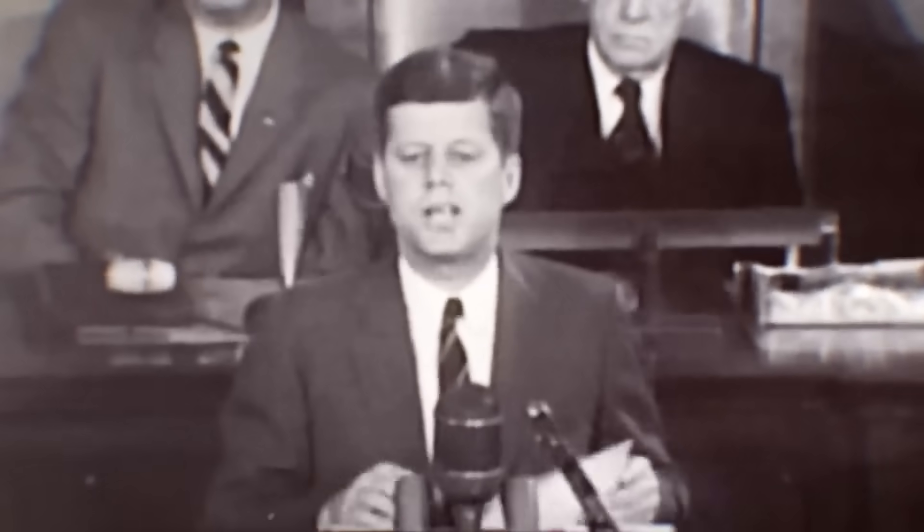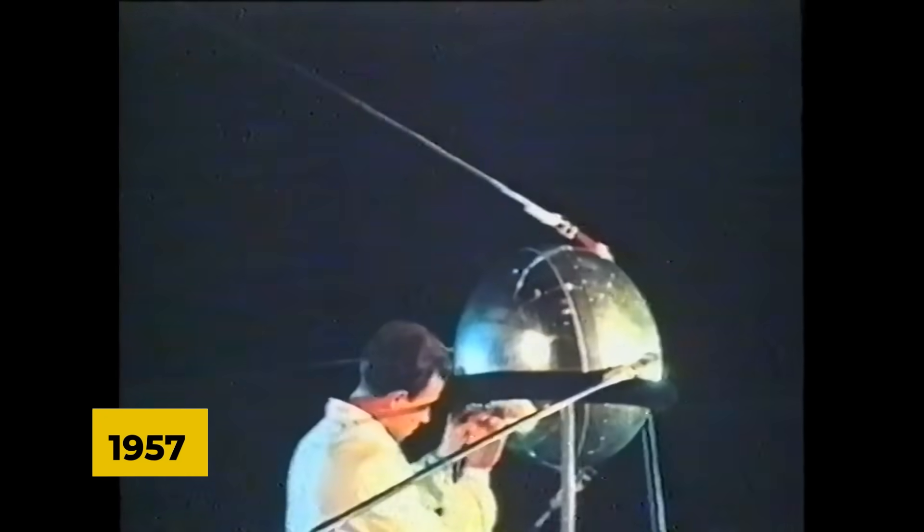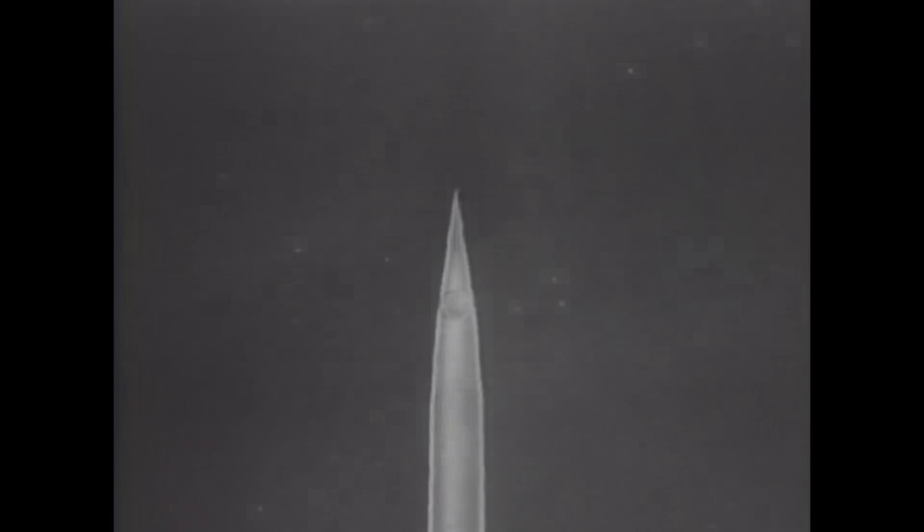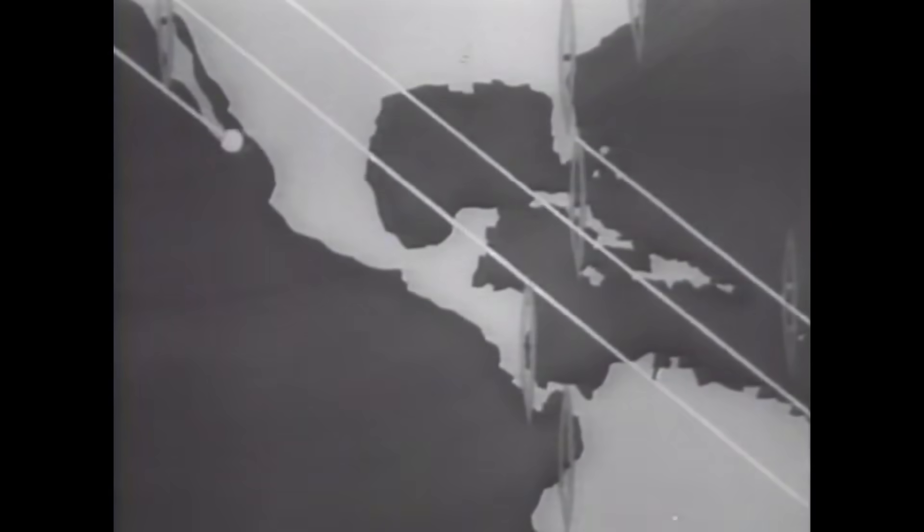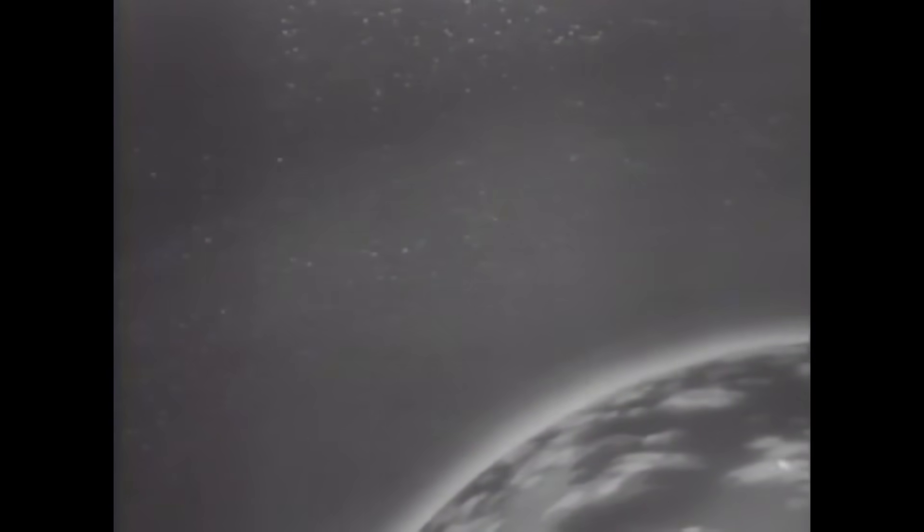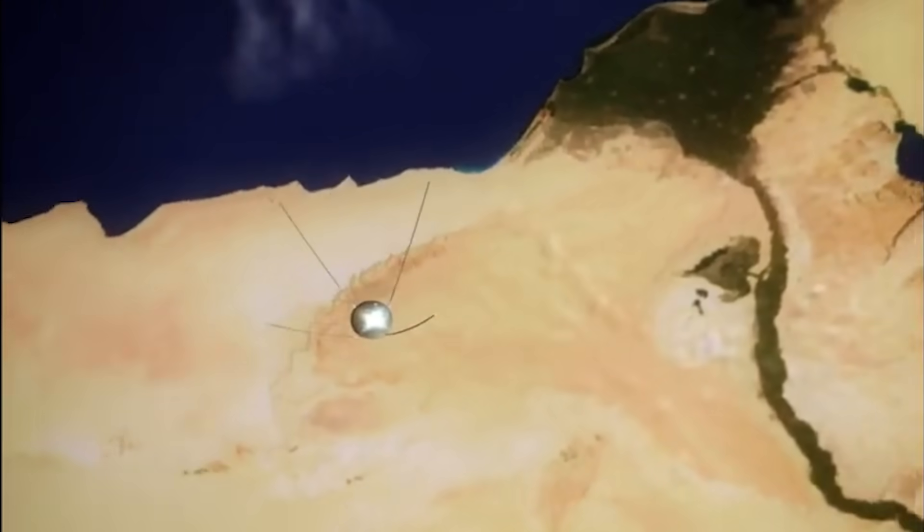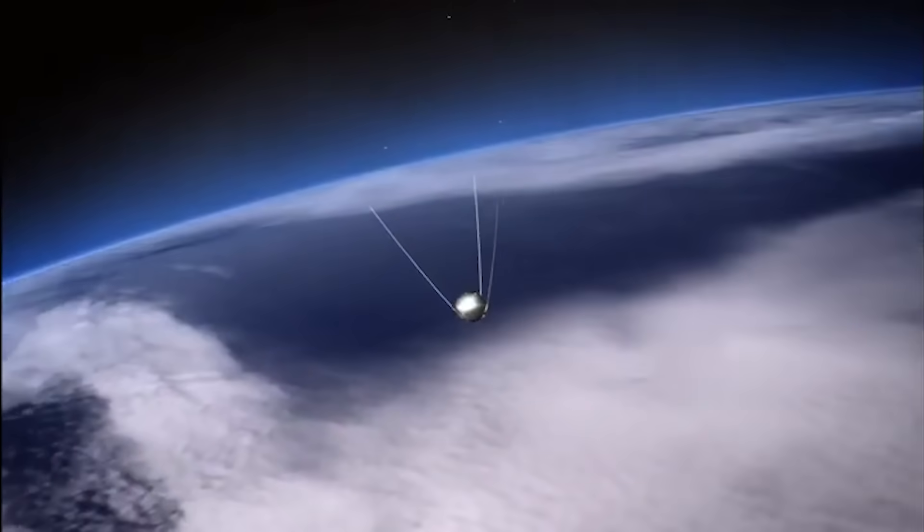Our journey begins in the mid-20th century during the intense rivalry between the United States and the Soviet Union, known as the Space Race. In 1957, the Soviet Union launched the world's first artificial satellite, Sputnik 1, into orbit. This basketball-sized metal sphere, equipped with radio transmitters, marked the beginning of a new era in space exploration. Sputnik 1, weighing about 184 pounds, transmitted radio pulses that were received on Earth. While its scientific capabilities were limited, its successful launch demonstrated the technological prowess of the Soviet Union and sparked a wave of excitement and concern in the international community. This historic event marked the dawn of the space age.